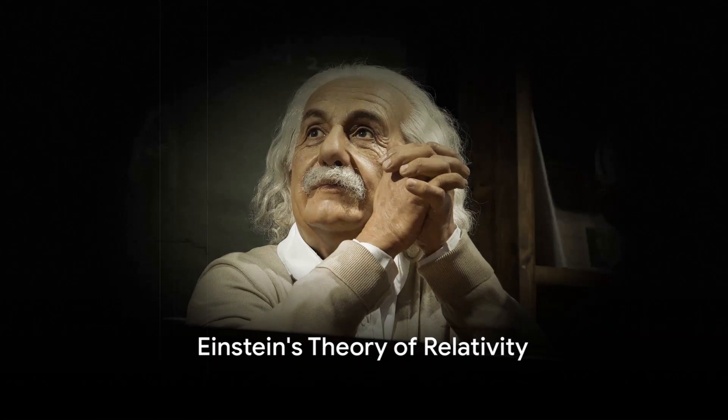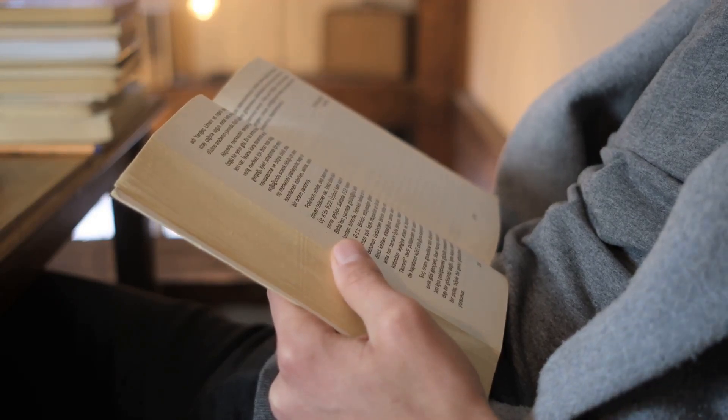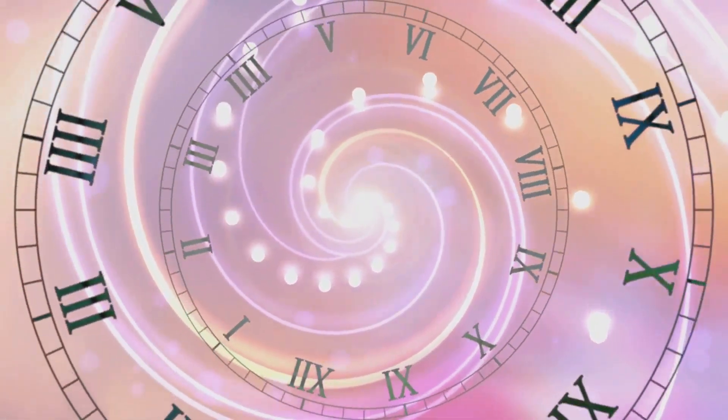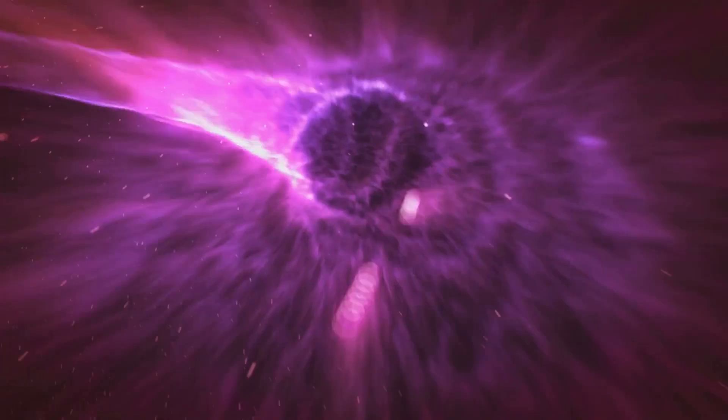Einstein's theory of relativity revolutionized our understanding of time, space, and of course the speed of light. Introduced by Albert Einstein in the early 20th century, this theory fundamentally changed the way we perceive the universe. At the heart of this theory is the concept that the speed of light is constant for all observers, regardless of their own motion or that of the source of light. This has far-reaching implications for our understanding of time and space. According to Einstein's theory, time can slow down or speed up depending on how fast you move relative to something else. This is known as time dilation. And space isn't a fixed arena in which events unfold, but is flexible and can be warped by gravity. This is why light appears to bend when it passes near a massive object.